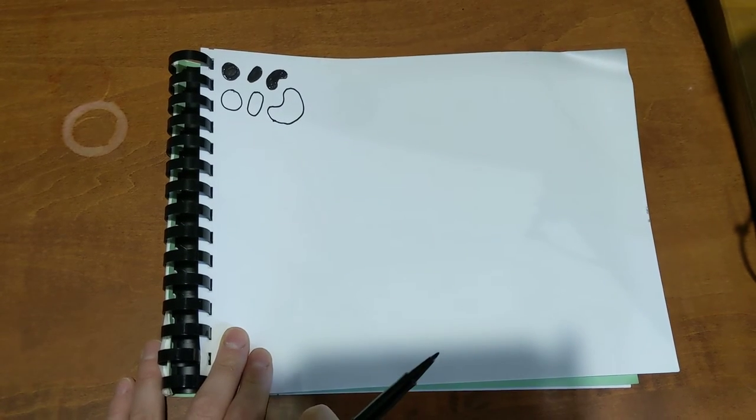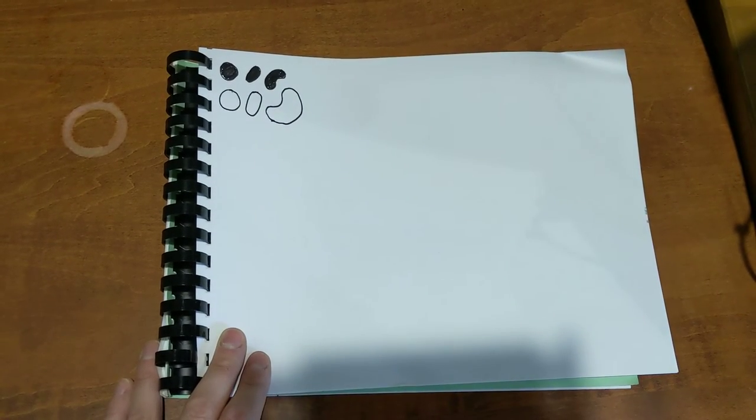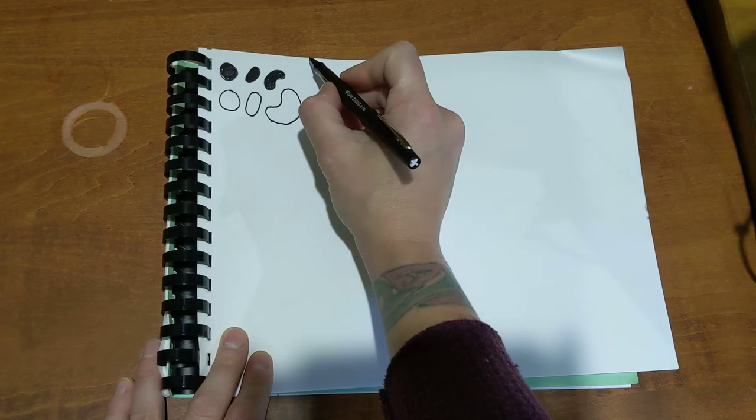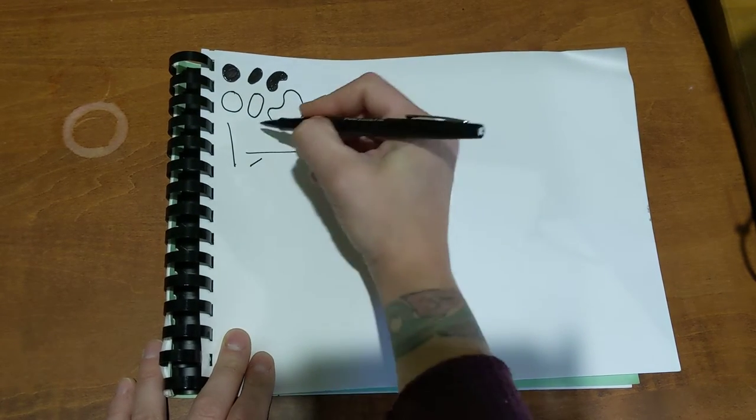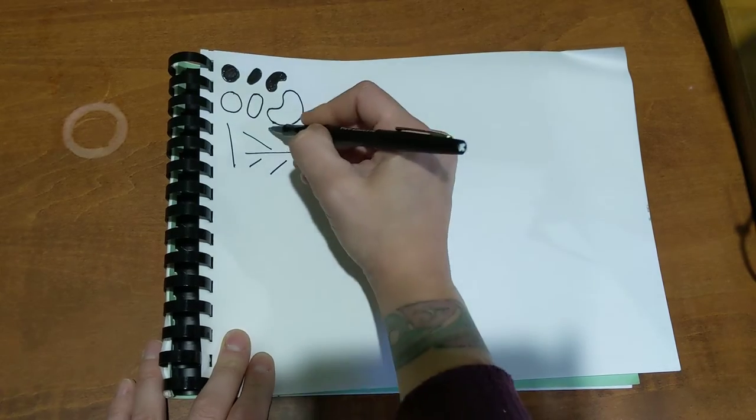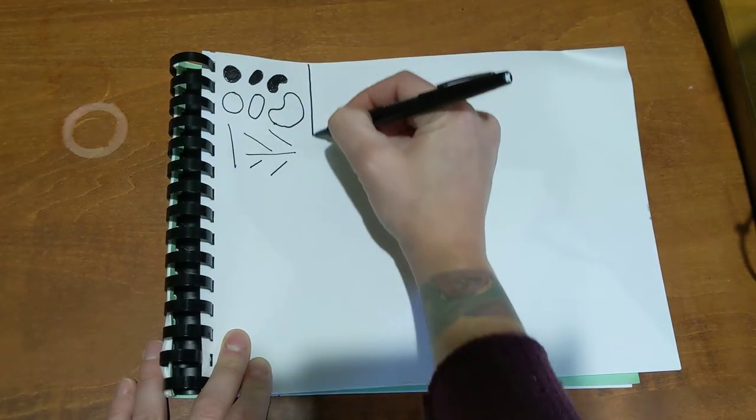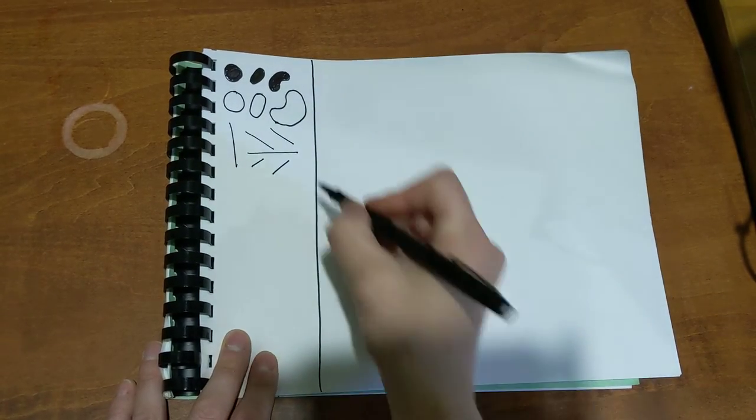All right, straight lines can go up and down or side to side. They can go diagonally, they can be long, they can be short.